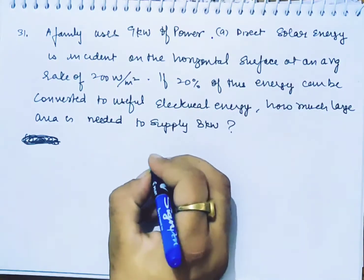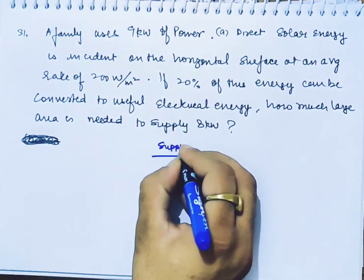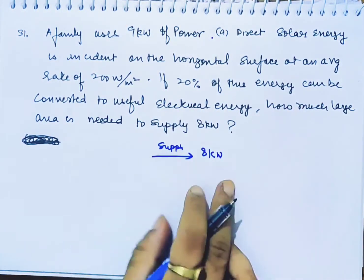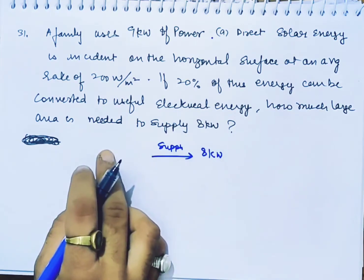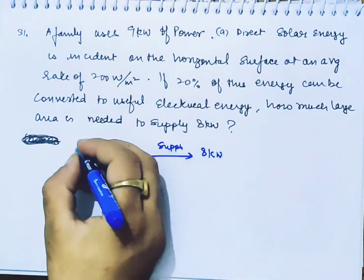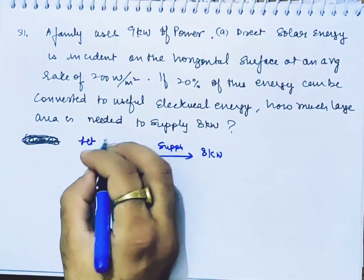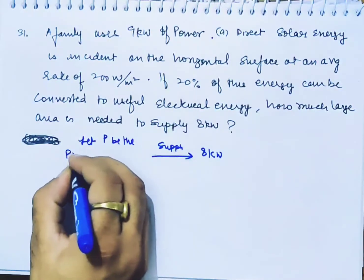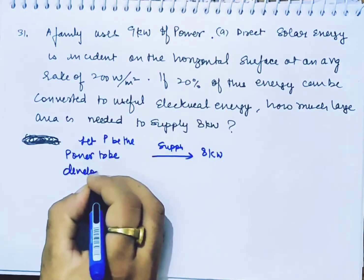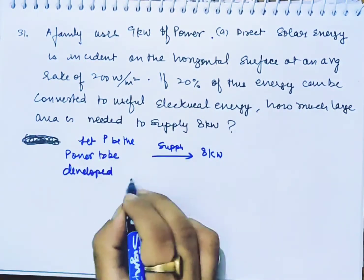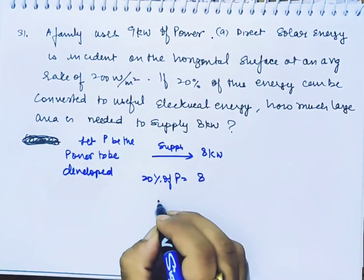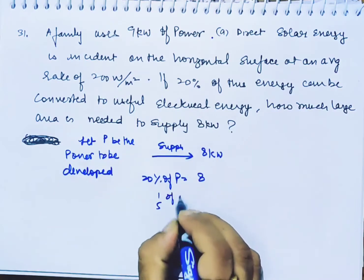We need a supply of 8 kilowatts. But the problem is we can only take 20% of the power. So overall, 20% of P is 8 kilowatt. Let P be the total power to be developed. So, 20% of P equals 8.